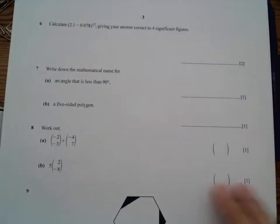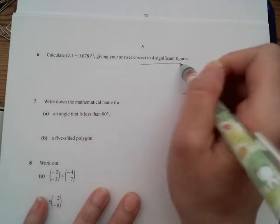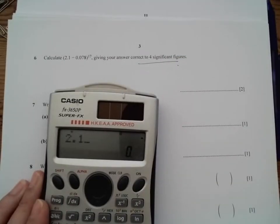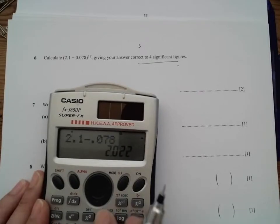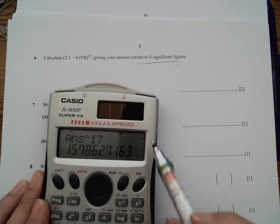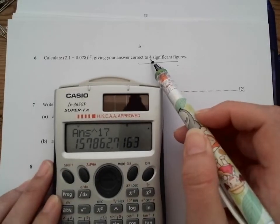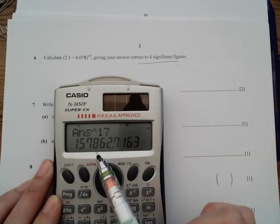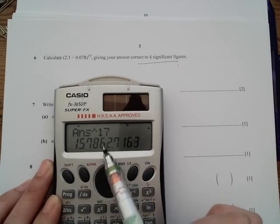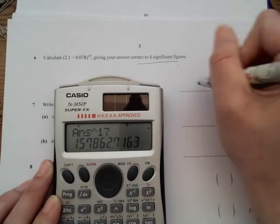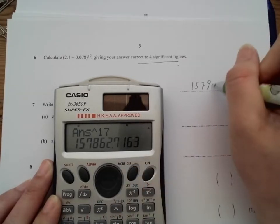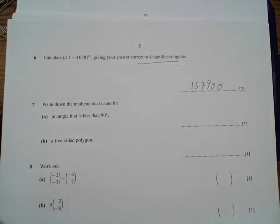And then moving on, we need to calculate now and then with four significant figures. So we use our calculator: 2.1 minus 0.078 to the power 17. Now we've got a big number, but four significant figures. So we start to count: 1, 2, 3, 4. And we're looking at 8, and then the 6 will be 1 up. So we have 1, 5, 7, 9, and then these zeros have to fill in.